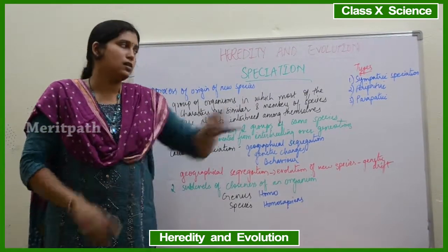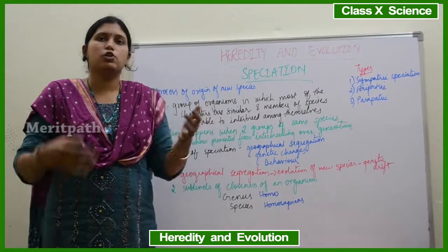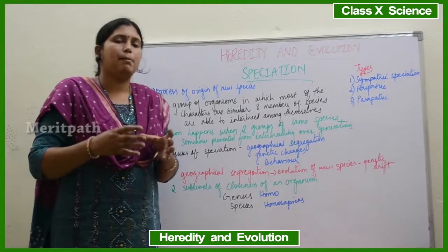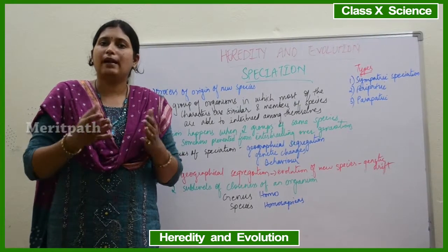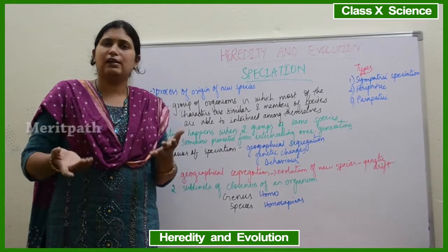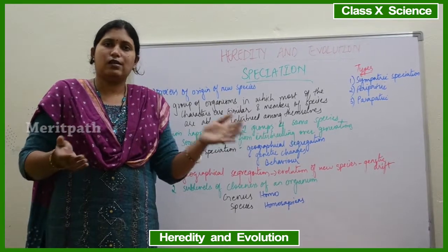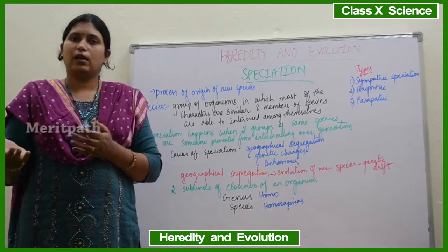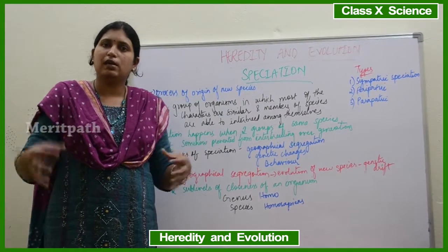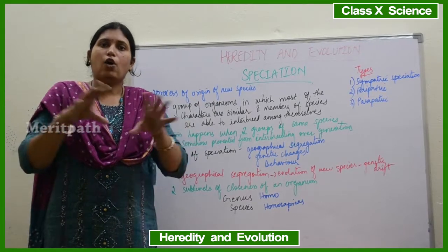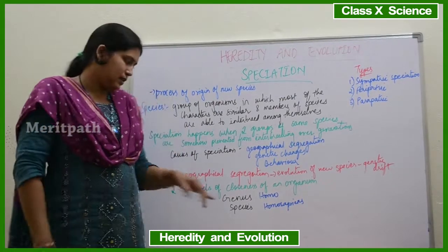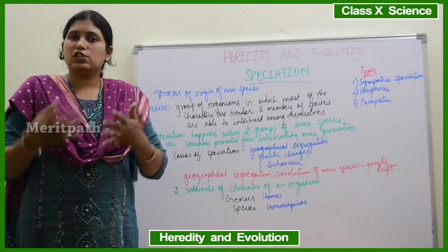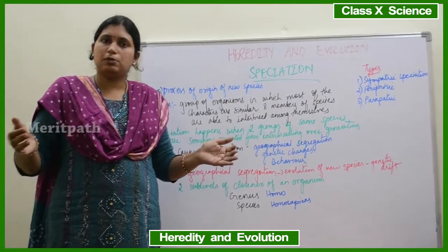Sometimes behavior changes cause speciation, so parapatric speciation may also be known as behavioral speciation. For example, on an island there are two groups of beetles, but their food habits are different. One type of organism likes a hotter climate and another likes a colder climate, so their food habits differ. They all belong to the same genus, but behavioral changes also lead to the evolution of two separate species.